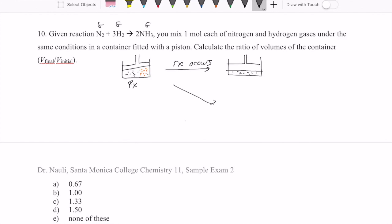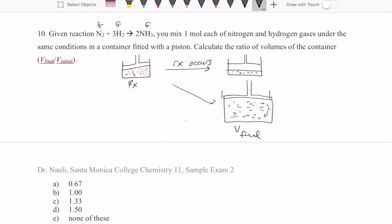The other possibility is you might make more gas than what you start with at the beginning. So we have to figure out which of these situations occurs, and then we have to compare the volume in the final state compared to the volume initially of the gas.